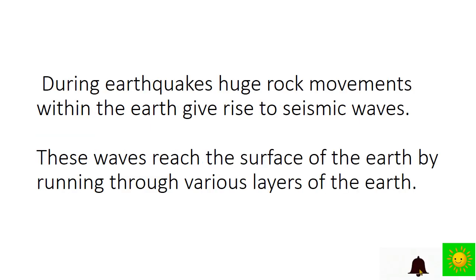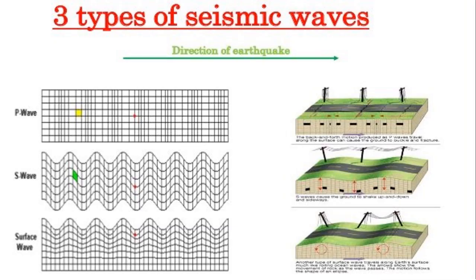Geologists receive more information about the nature of the inner part by examining earthquakes. During earthquakes, huge rock movements within the earth give rise to seismic waves. These waves reach the surface of the earth by running through the various layers of the earth. Seismometers are installed in different stations of the earth. Seismic waves are automatically marked by these seismometers.